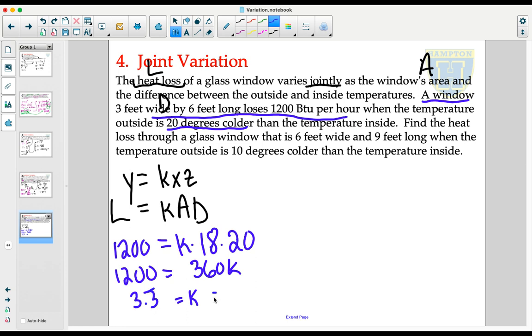A better way to write that would be 10 over 3. Rewriting our loss formula, now knowing what K is, we still have area and we still have difference in temperature.